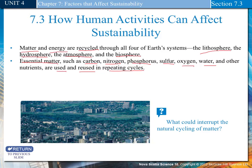What could interrupt natural cycling of matter? Humans. Human activity, such as the production of material that cannot be broken down into essential matter easily. So if we think about all the waste we put in the dump — if it can't be broken down easily, then those essential materials can't go back into the cycle.